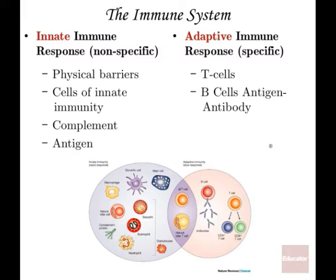Just to review: the immune system is composed of the innate immune response and the acquired adaptive immune response, and most infections involve the interaction of both of these arms. Innate immunity involves the physical barriers, the cells of innate immunity, complement, and antigen identification. Adaptive immunity specifically involves interactions with the T cells and B cells in relationship to antibody production. All of these aspects of immunity come into play with most infectious agents — bacteria, viruses, protozoa, fungi, and most recently the helminths.